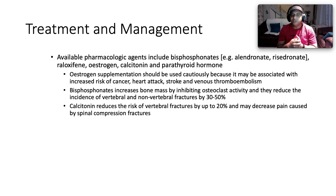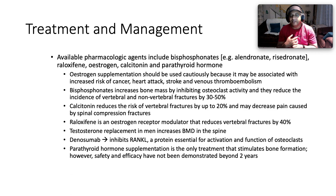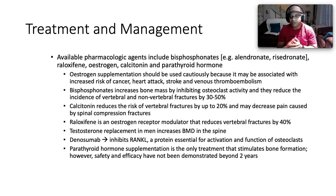Bisphosphonates reduce the incidence of vertebral and non-vertebral fractures by some 30 to 50 percent. Calcitonin reduces risk of vertebral fractures by up to 20 percent and may also significantly decrease pain from spinal compression fractures. Raloxifene, a SERM, reduces vertebral fractures by 40 percent. Testosterone replacement in men increases bone mineral density at the spine. Denosumab inhibits RANK-L — the protein essential for activation of osteoclasts — thereby inhibiting osteoclastic activity. Parathyroid hormone supplementation is the only treatment that stimulates bone formation, though safety and efficacy have not been demonstrated beyond two years.